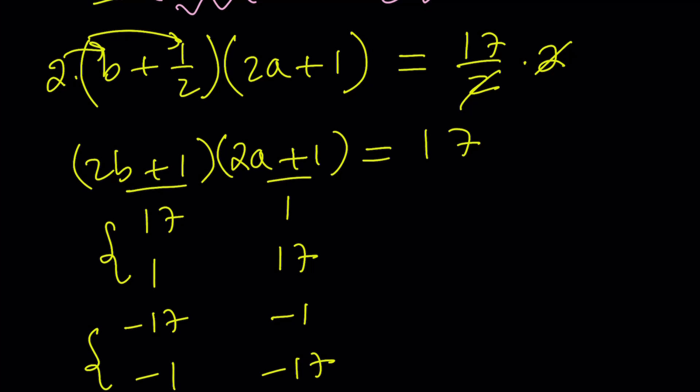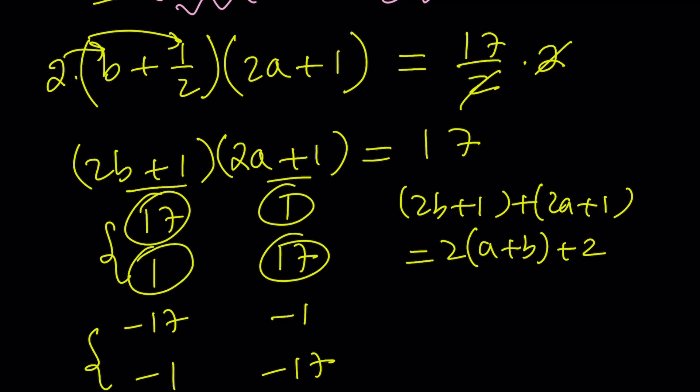So you could also verify that by adding these two terms, 2b plus 1 plus 2a plus 1 gives you 2 times a plus b plus 2. And we know that it's always 17 plus 1 for these cases, and that's going to be 18. And if you subtract 2 and divide by 2, you'll get the answer. Make sense? So that wouldn't matter if you just use one of them. Having said that, let's go ahead and take a look at this one and this one since it doesn't matter.